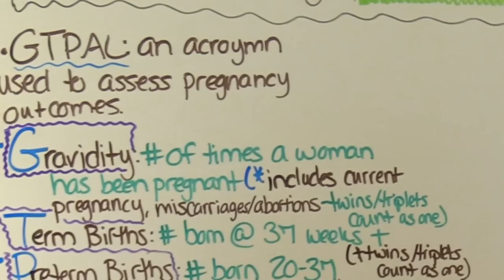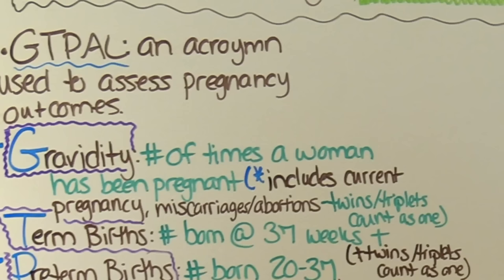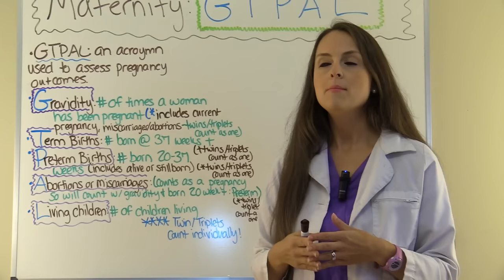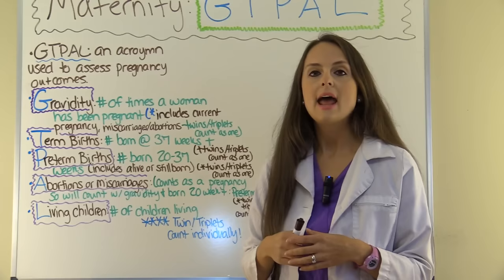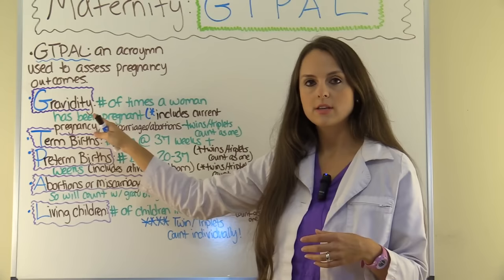G stands for gravida, which is the number of times a woman has been pregnant. This includes the current pregnancy if she's currently pregnant, and any miscarriages or abortions, because a lot of people get confused and forget to add the current pregnancy into gravida. Also remember that twins and triplets count as one under gravida — if she has twins, it doesn't count as two; it counts as one pregnancy.